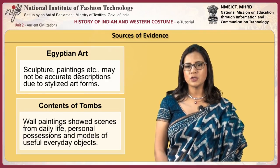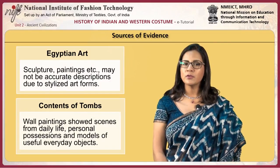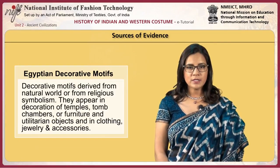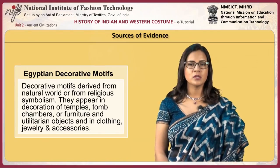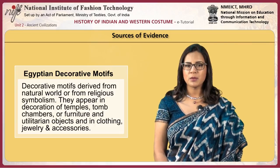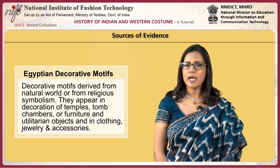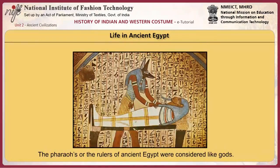Wall paintings inside tombs showed scenes from daily life, personal possessions and models of useful everyday objects. Decorative motifs derived from the natural world or from religious symbolism appear in decoration of temples, tomb chambers, furniture and utilitarian objects, and in clothing, jewelry and accessories. By 3200 BCE, the distinct cultures of upper kingdom and lower kingdom had amalgamated to form one kingdom, often depicted by the pharaoh's headgear of double crown.